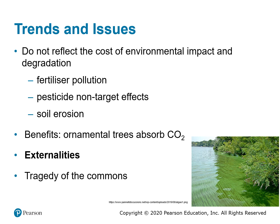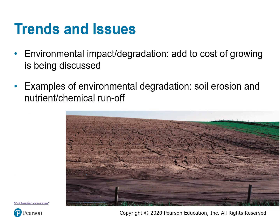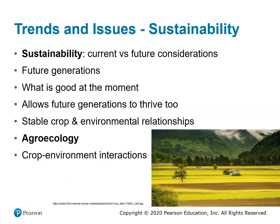Economists call these externalities — the costs or benefits not included in the price of commodities. Some scientists argue that environmental degradation occurs when no one owns a resource, so if no one owned the land, it's in no one's interest to conserve it — this is referred to as the tragedy of the commons. Adding environmental impact or degradation to the cost of growing plants is now being discussed, with examples including soil erosion and nutrient or chemical runoff.